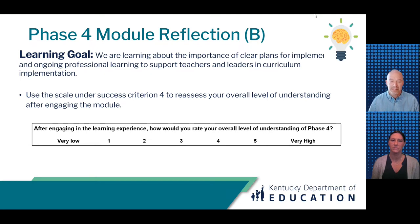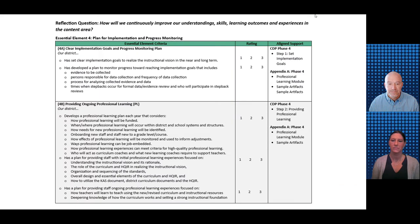To help you determine possible next steps, we recommend you complete the section of the CDP self-assessment tool focused on Essential Element 4, Plan for Implementation and Progress Monitoring. The element is divided into three indicators: 4A focused on clear implementation goals and progress monitoring; 4B providing ongoing PL; and 4C gathering and analyzing data to make adjustments. Each indicator is broken down into specific criteria with a rating scale of one (not present in our district) to three (fully present and systematic in our district). This may help you pinpoint specific aspects of Phase 4 you want to prioritize as part of your action plan.